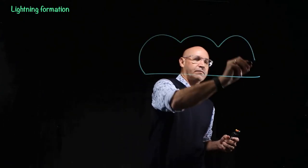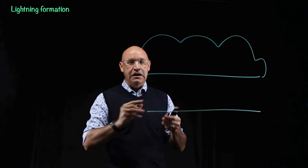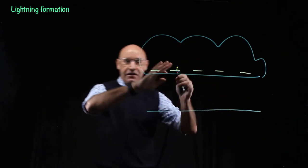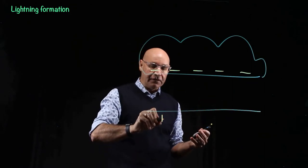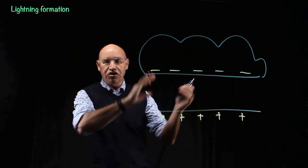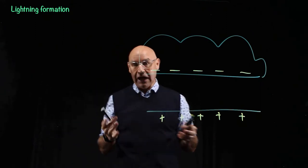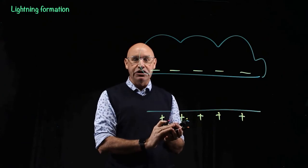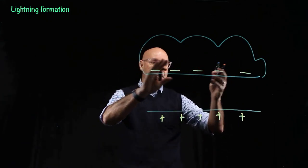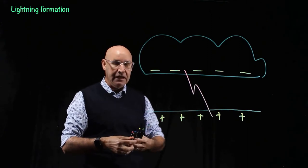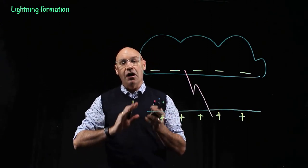Lightning is the discharge of a charge separation that builds up between two regions. For example, the charge at the bottom of a cloud might be negative, and the charge of the ground is positive. So there's a charge separation that's built up between the cloud and the ground, and lightning is a discharge of that charge separation, where electrons jump the gap between the cloud and the ground to discharge or neutralise the charge separation.